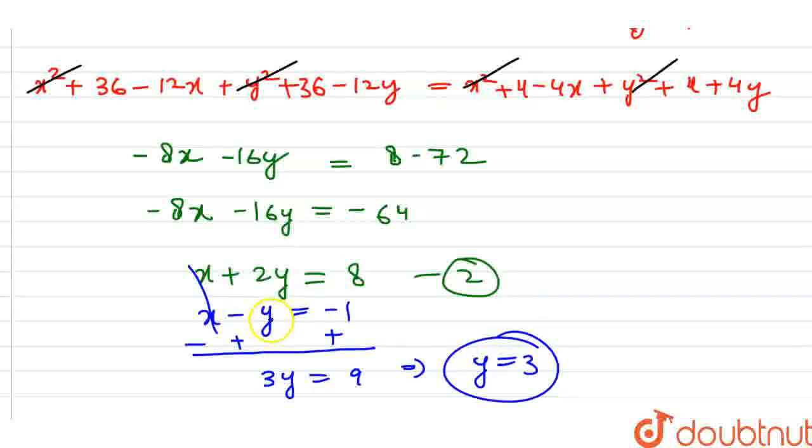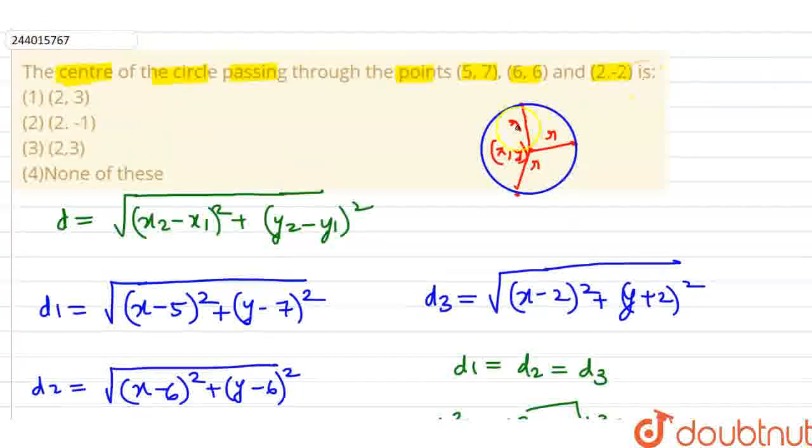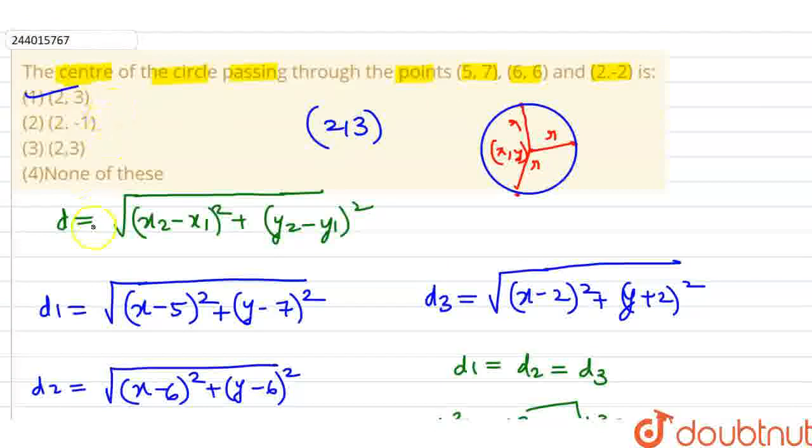Now y equals 3, so x value is equal to 2. The center is equal to 2 comma 3. So this is option number 3. Thank you friends.